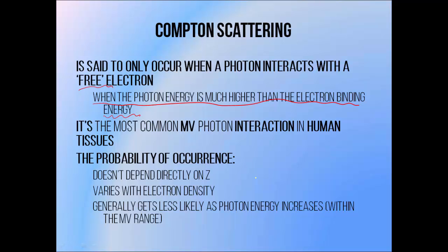The probability of Compton interaction doesn't depend much on the atomic number of the materials through which the photons are passing, but it does increase with the electron density of the material. Which makes sense, because if you pack more electrons into a given volume, there are more targets for the photons to hit, therefore the interactions are more likely. While it's usually the most common interaction type in radiotherapy beams, the probability does decrease slightly with beam energy, becoming equally as likely as pair production at energies of around 24 MeV.